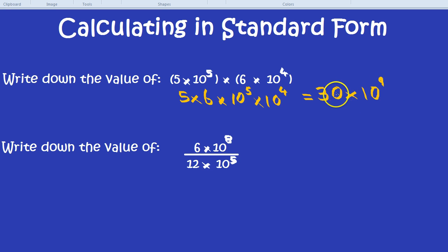Now, are we done? Is this standard form? 30 times 10 to the power of 9. It kind of looks like it, doesn't it? But remember, this first number has to be between 1 and 10. It can't be 30. Oh dear. How are we going to solve that problem?